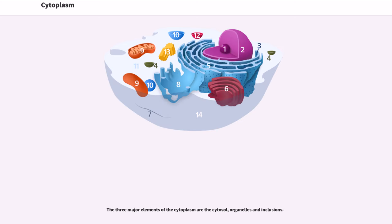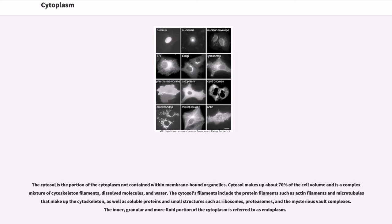The three major elements of the cytoplasm are the cytosol, organelles, and inclusions. The cytosol is the portion of the cytoplasm not contained within membrane-bound organelles. Cytosol makes up about 70% of the cell volume and is a complex mixture of cytoskeleton filaments, dissolved molecules, and water.